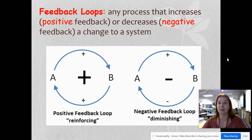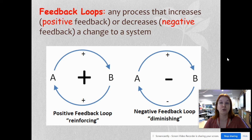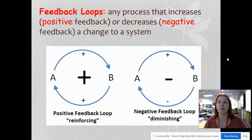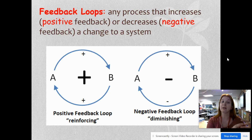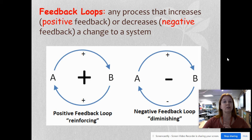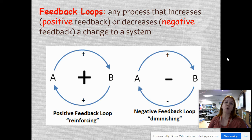Feedback loops: this is any process that is either going to increase — which is positive feedback — or decrease — negative feedback — a change to a system. If you have a positive feedback loop, it keeps adding on. Take a tiny snowball at the top of a hill — roll it down and it gets bigger because it gathers more snow, which makes it roll faster and gather more snow and get bigger. That's a positive feedback loop because it keeps going in one direction.